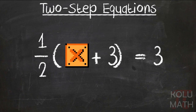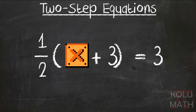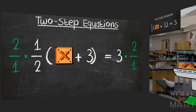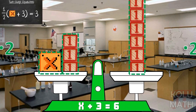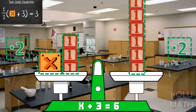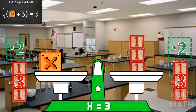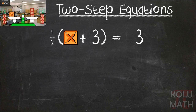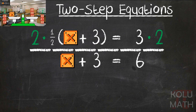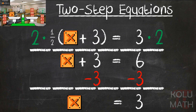So we've got one half times the quantity x plus 3 equals 3. I know I have to deal with what's outside those parentheses first. Sometimes it's easier just to deal with the coefficient right out front. We've got one half — what's going to get rid of a one half? That's multiplying by 2 over 1, which is the same thing as 2. So basically, we're doubling both sides. Now I've got x plus 3 equals 6, so I subtract 3 from both sides, giving us x equals 3.